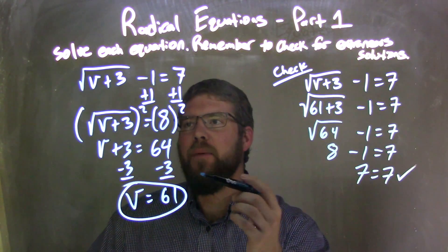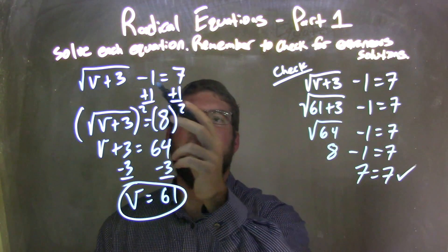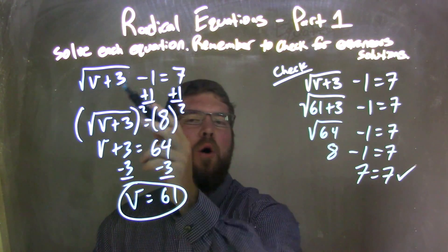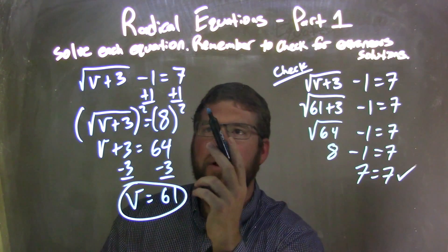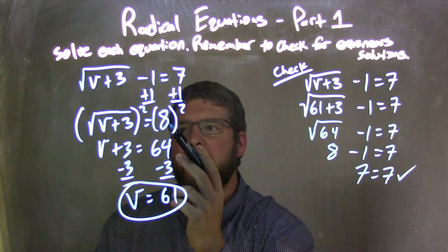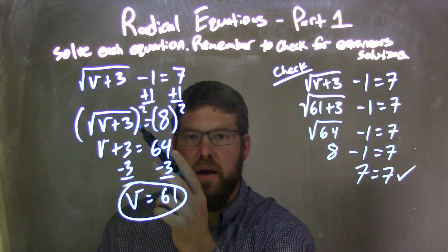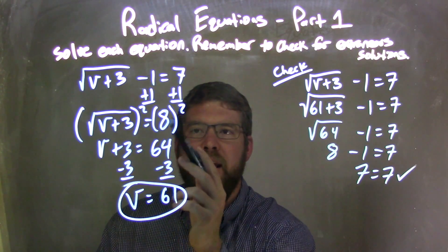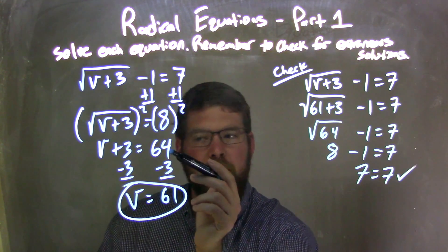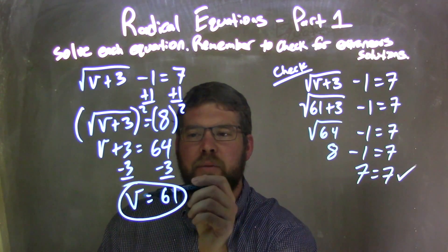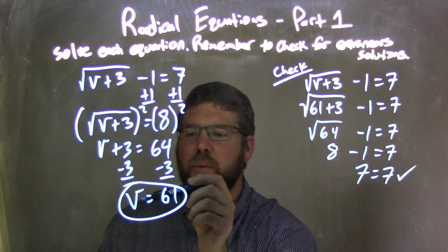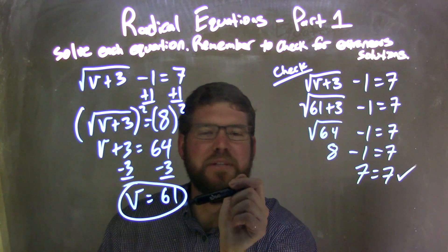Let's recap. We're given the square root of v plus 3, minus 1 equals 7. The square root is only over the v plus 3. I added 1 to both sides, leaving me with 8 on the right and just the square root of v plus 3 on the left. I then squared both sides, leaving me with v plus 3 on the left and 8 squared equals 64 on the right. I subtracted 3 from both sides, so v equals 64 minus 3, which is 61.